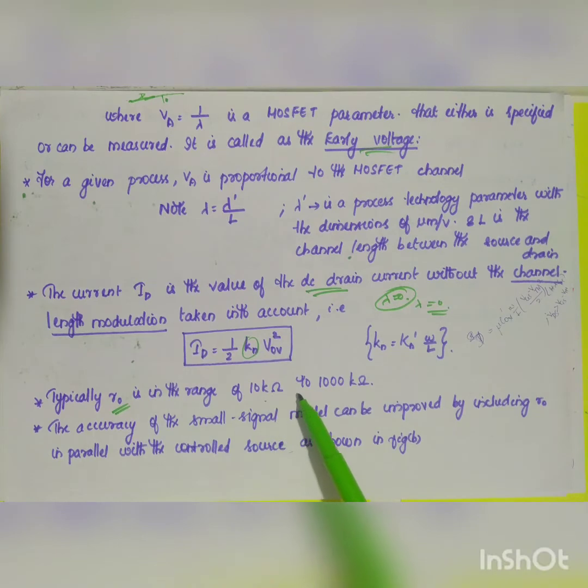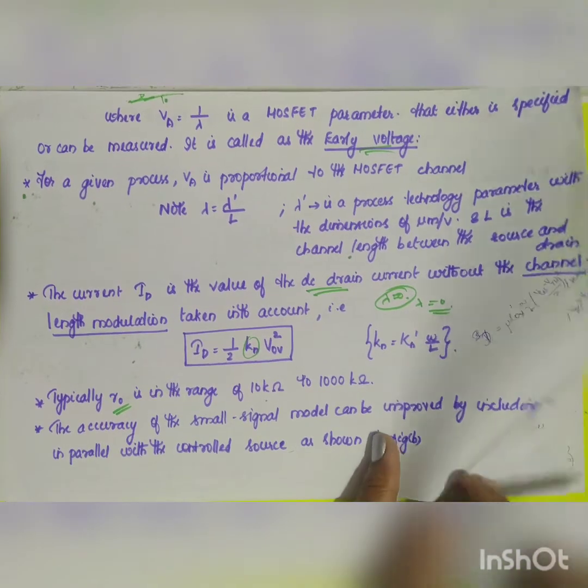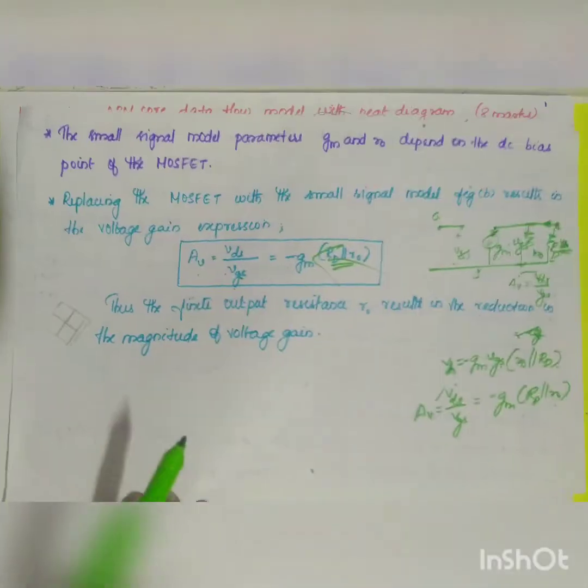Typically your R naught is in the range of 10K to 1000K. The accuracy of the small signal model can be improved by including R naught in parallel with the controlled source as shown in the figure.